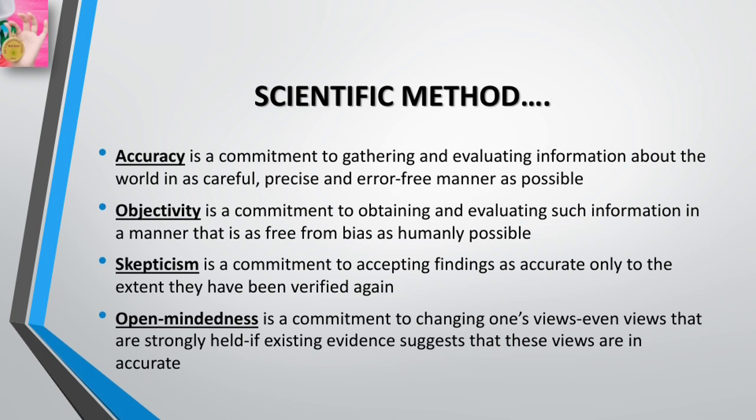Basically, for scientific methods — to be science in reality — the term science does not refer to a special group of highly advanced fields. Rather, it refers to two things: number one, a set of values, and number two, several methods that can be used to study a wide range of topics.